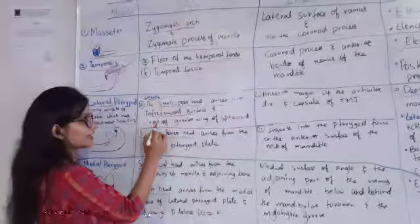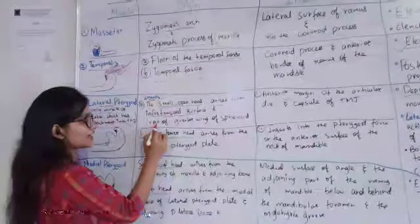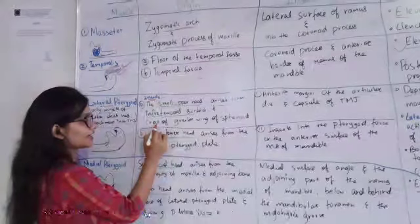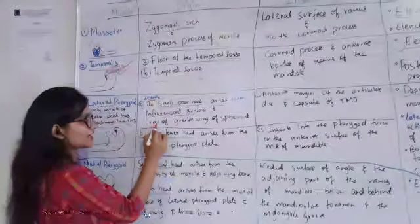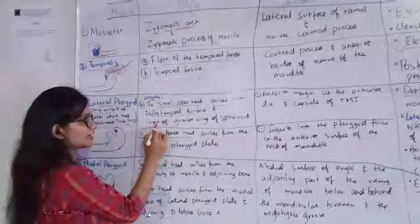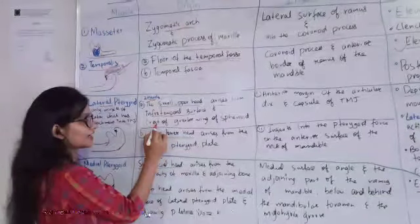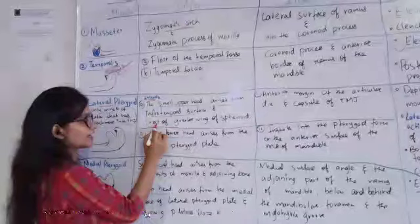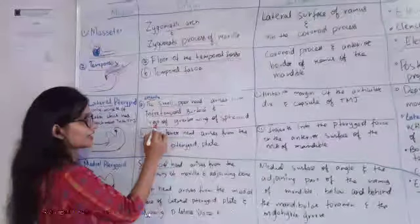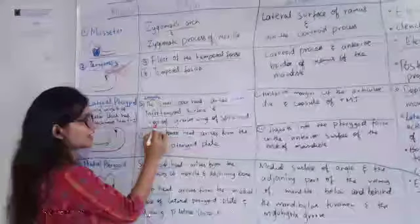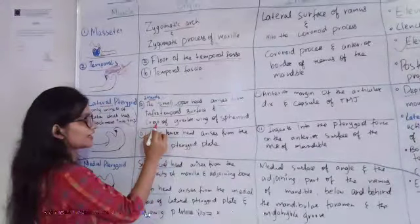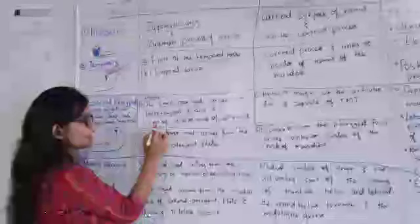Basically, I have completed this topic. The Muscles of Mastication are of 4 types: Masseter, Temporalis, Lateral Pterygoid, and Medial Pterygoid. Masseter, Temporalis, and Medial Pterygoid all elevate the mandible and help close the mouth. The Lateral Pterygoid opens the mouth by depressing the mandible. That's all for today.